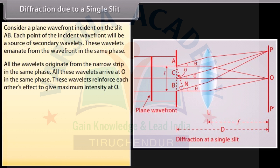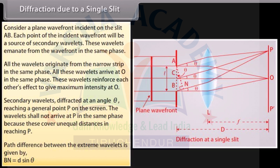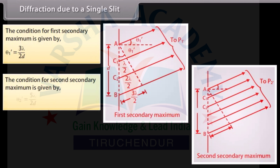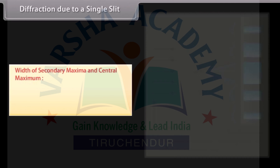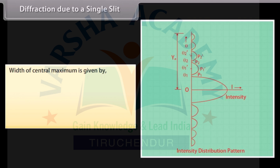Consider the formation of secondary minima and secondary maxima. Secondary wavelets diffracted at angle theta reach a general point P on the screen. The wavelets shall not arrive at P in the same phase because they cover unequal distances in reaching P. Path difference between the extreme wavelets is given by BN = D sin theta. The condition for 1st secondary maximum is at angle = 3λ/2D. The condition for 2nd secondary maximum is at angle = 5λ/2D. Hence, the condition for nth maximum is at angle = (2n+1)λ/2D. Width of secondary maximum is given at angle = 2Dλ/d.